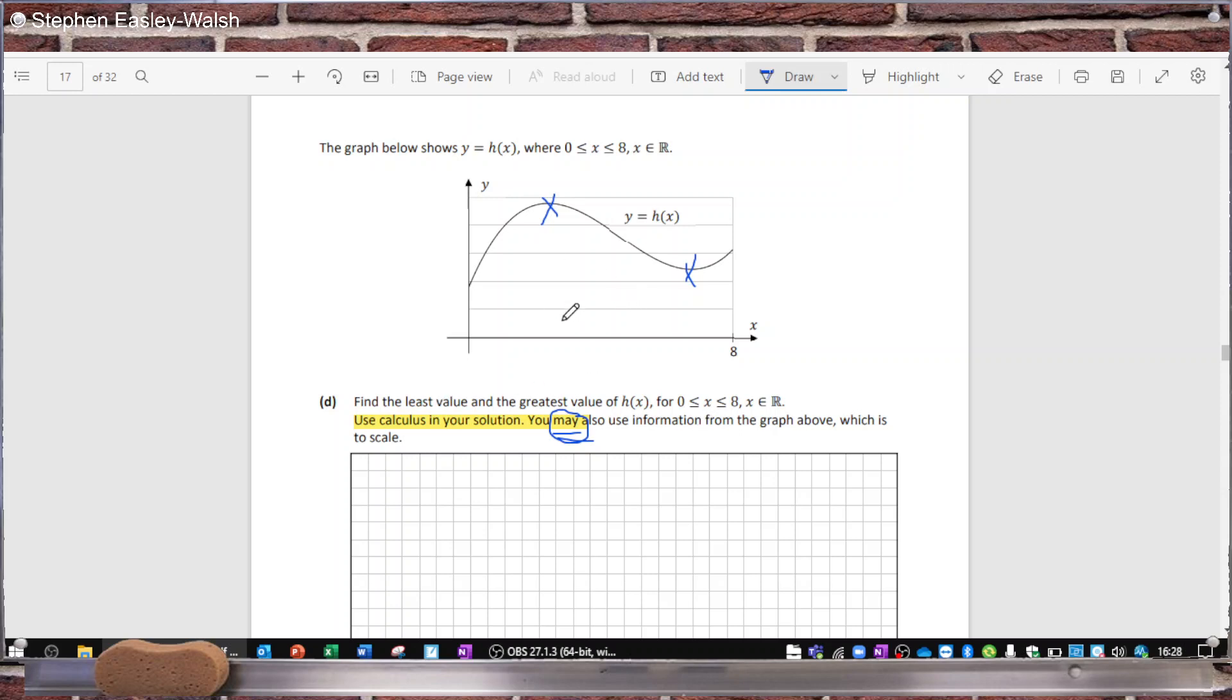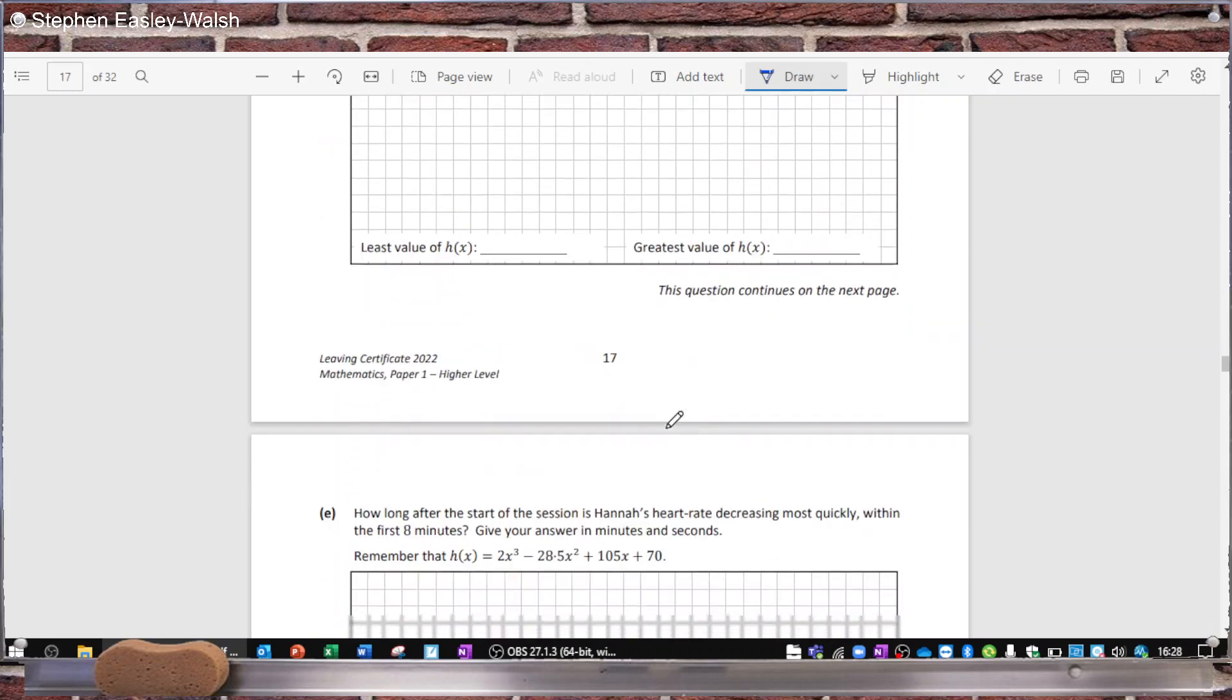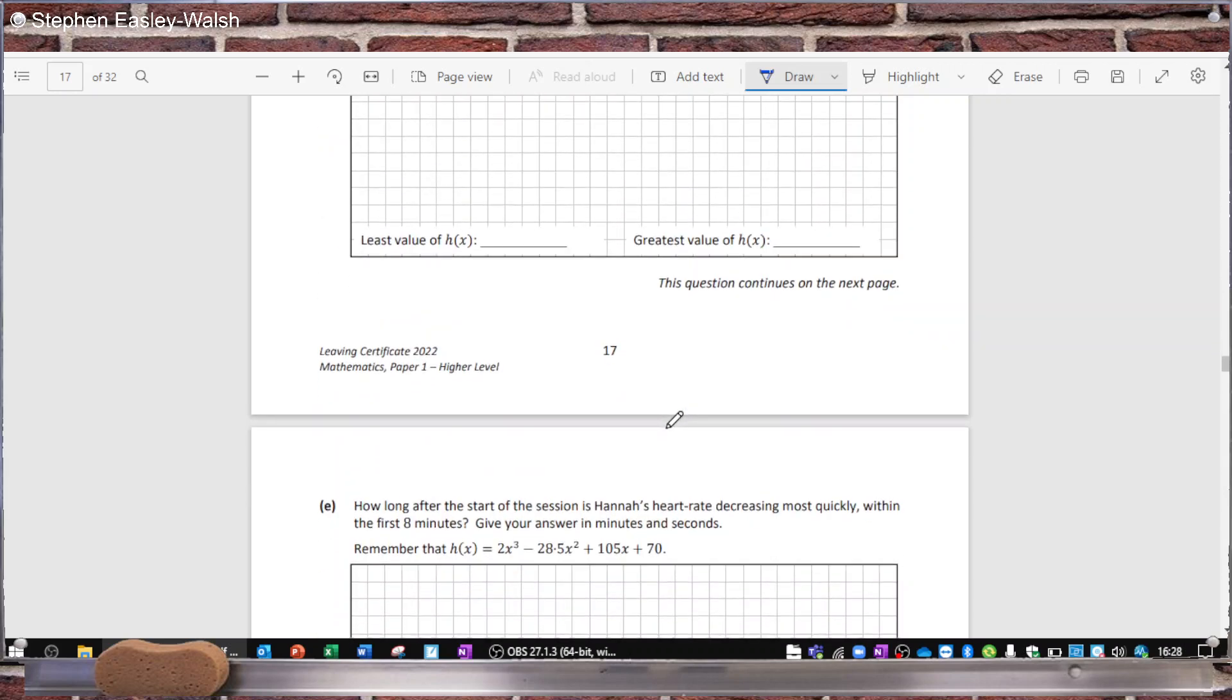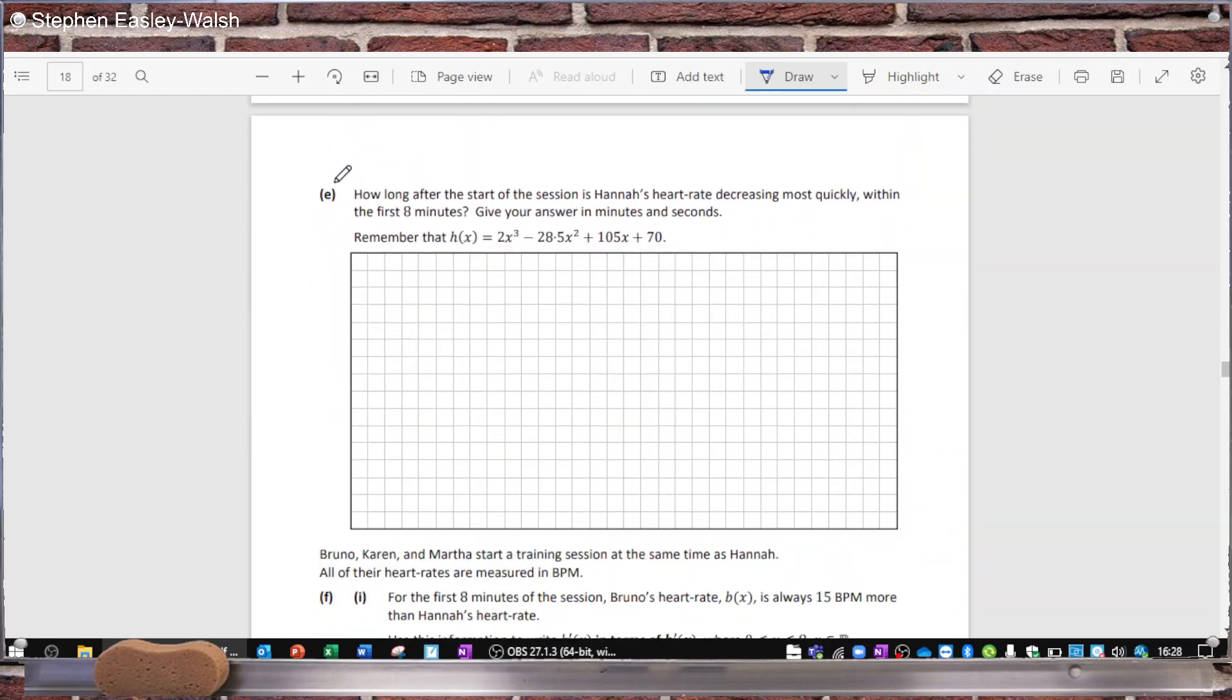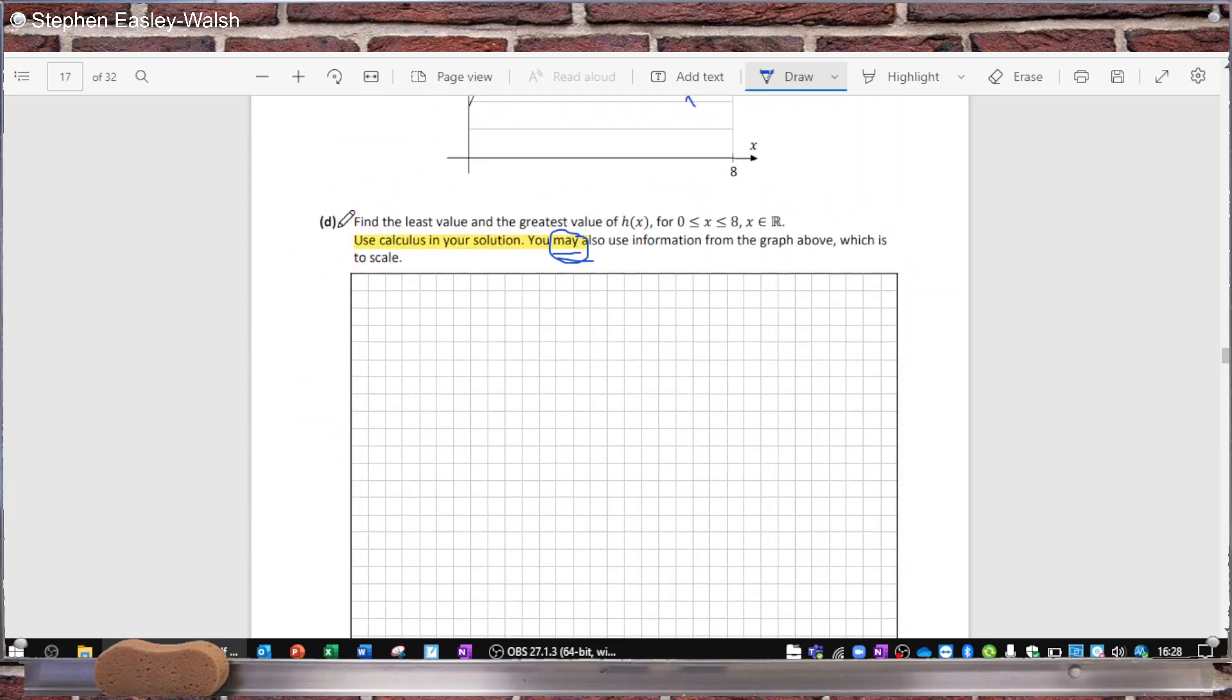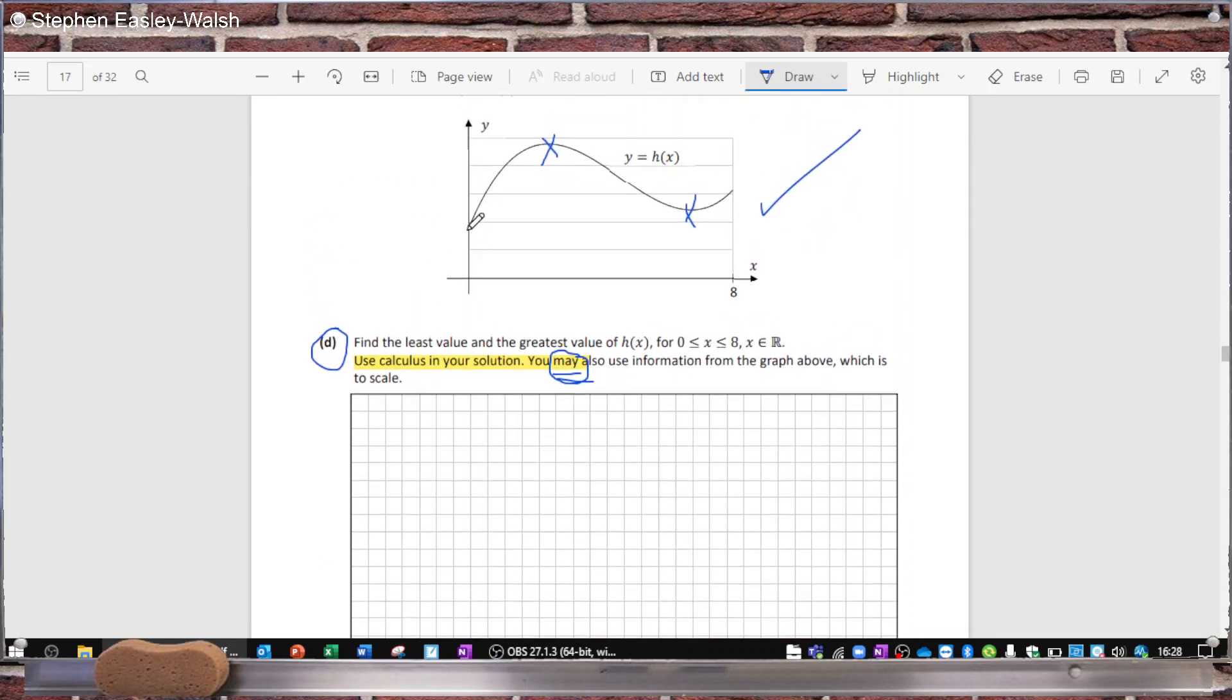I thought they were saying use calculus to get the two solutions, and then use the graph to figure out which one is the maximum and which is the minimum. So I thought the graph was here to help you determine the max and the min without the need of the second derivative, because we need the second derivative in part E. So it was possible to avoid the use of the second derivative in part D, and I thought that was going on until people in the comments were pointing out, no I think this is the least here, which is true.